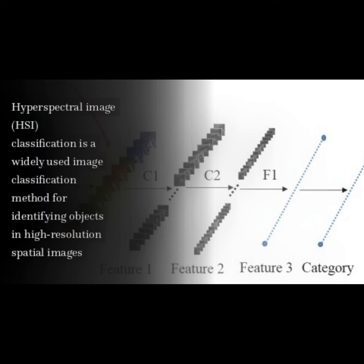Hyperspectral Image (HSI) classification is a widely used image classification method for identifying objects in high-resolution spatial images.